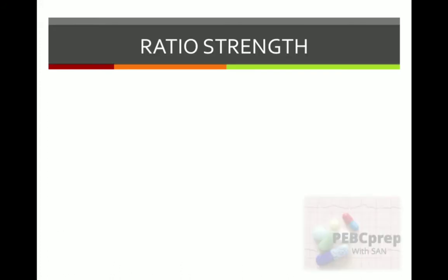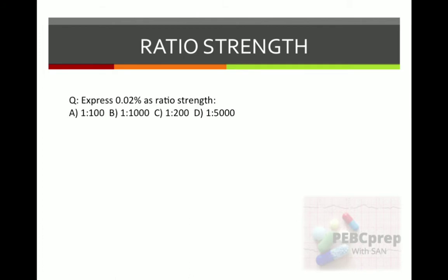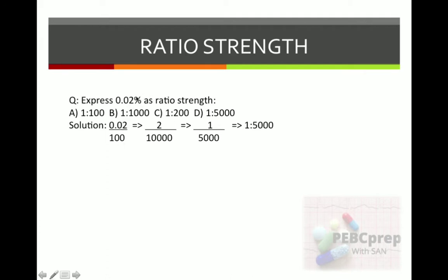Next topic: ratio strength. Express 0.02% as ratio strength. Options: A) 1:100, B) 1:2000, C) 1:200, D) 1:5000. Solution: 0.02 over 100. Remove the decimal by moving it — 2 over 10,000. Divide to get ratio of 1: so 1 over 5000. The answer is D.